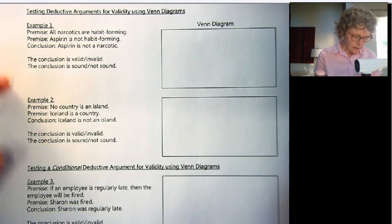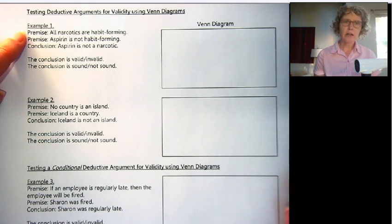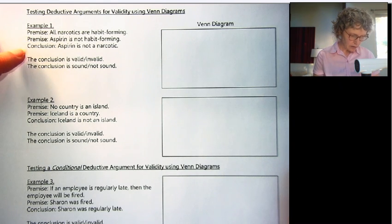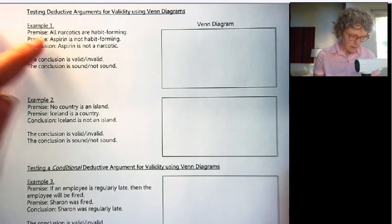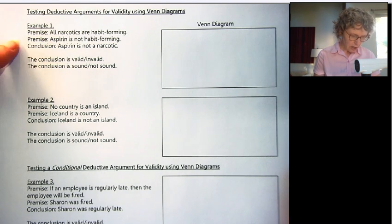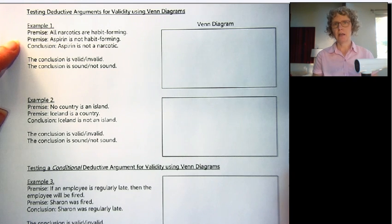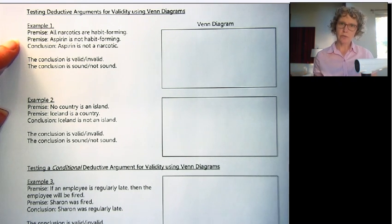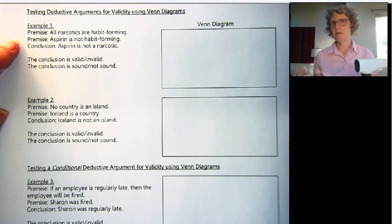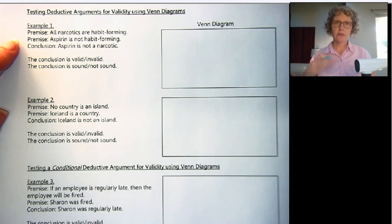Let's look at example one. We have two premises and a conclusion. The first premise says all narcotics are habit-forming. We're not worried yet about whether these things are true or false — we just want to represent them in a visual way, which is going to help us determine if the argument is valid.